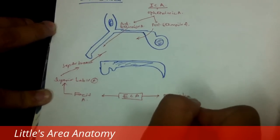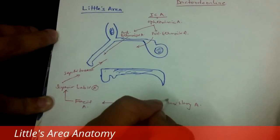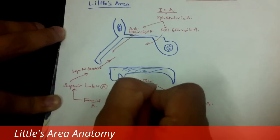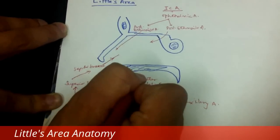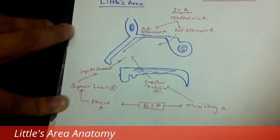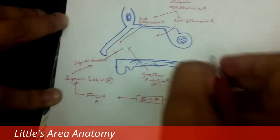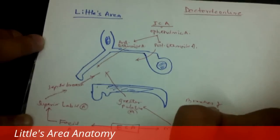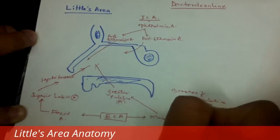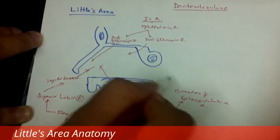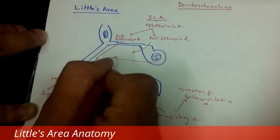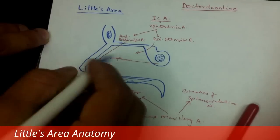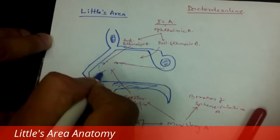Then the external carotid artery's posterior artery gives another branch, which is the maxillary artery. The maxillary artery gives one branch to the greater palatine artery, which also goes towards the nasal septum. The maxillary artery also gives another branch, the sphenopalatine artery, which comes from behind and also gives a septal branch towards the nasal septum.